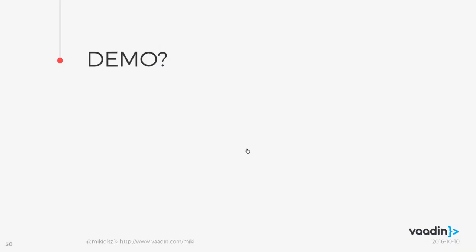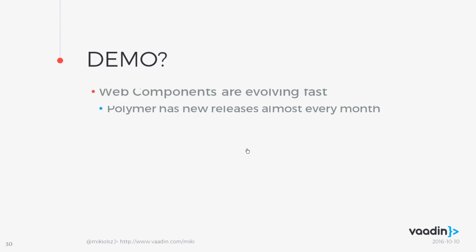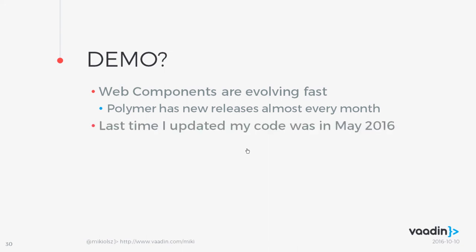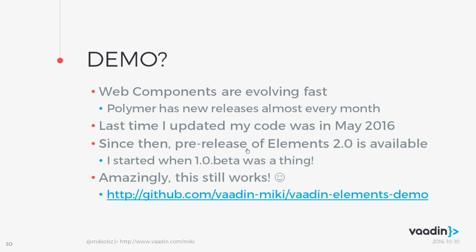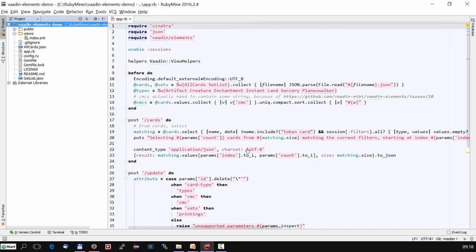Regarding the demo: web components are evolving really fast, and Polymer has new releases basically every month, some of which change the existing code base. The code was last updated in May — five months ago — and since then the pre-release of Vaadin Elements 2 has appeared. When coding started it was beta of version 1, so a whole new generation of elements is coming and the code isn't ready for the beta of the first one. This is unfortunately what happens with all emerging technologies.